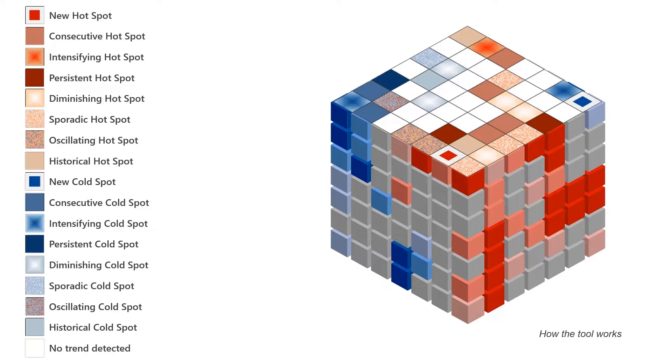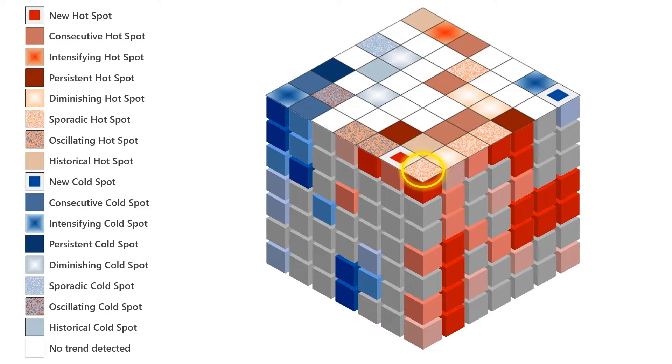Let's look at these a little more closely. Notice the column highlighted in the corner of the cube. This location is classified as a sporadic hotspot. The pattern is on again, then off again. Notice how in the first couple time periods at the bottom of the cube, it's a statistically significant hotspot, but then it isn't, but then it is again, but then it isn't, and in the last, most recent time step, it is a statistically significant hotspot.